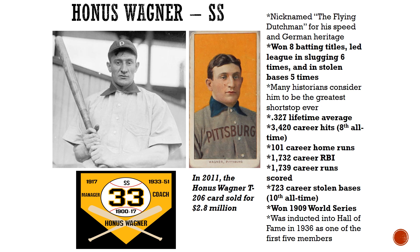Honus Wagner these days may be as famous for his baseball card as for his playing ability. They call it the Honus Wagner T206. Baseball cards used to be made by tobacco companies, and very few of these cards that are 100 years old or more have survived the test of time. But Honus Wagner's card, because he was a star and because there are so few of them, is probably the most famous baseball card in history — it has also sold for the most money. In 2011, one of the very few remaining Honus Wagner T206 cards sold at auction for $2.8 million.